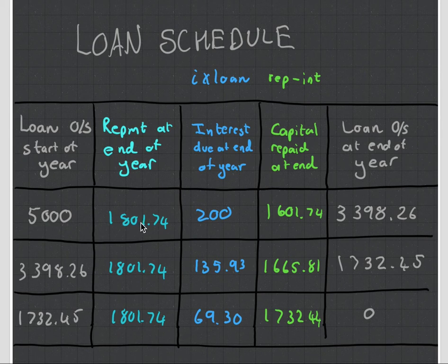This is my repayment. This is my interest component. This is my capital component. And you can see how the capital component is increasing and the interest component decreases like I mentioned before.